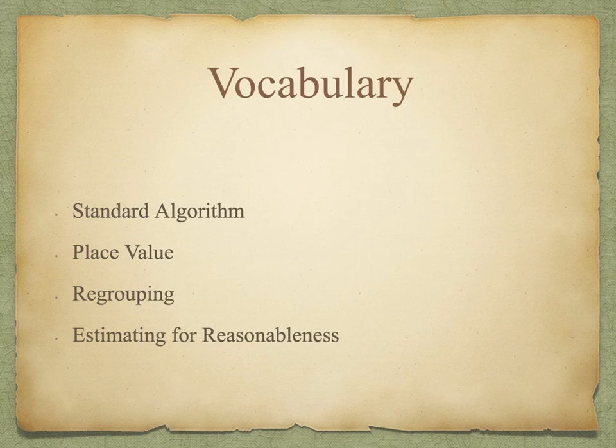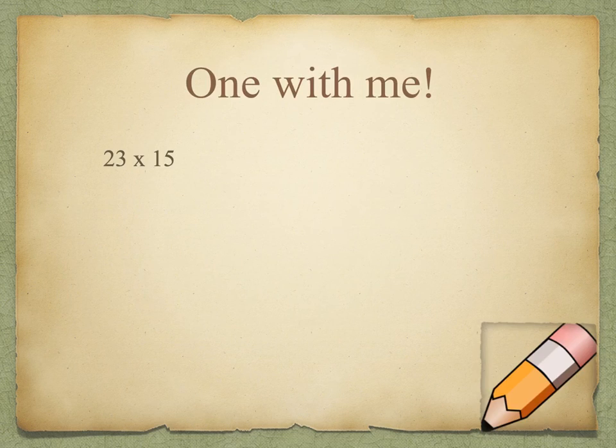But the biggest thing I want you to know is that estimating isn't something that we do on every single problem just because we have to. And it's not that we get our answer and then we estimate the answer. Estimating for reasonableness is a way to check your answer. So if you feel like you're not that confident in the answer that you got when you solved the problem, and you estimate, it gives you a quick check to see if your answer is close. And if it's not, then you made some kind of mistake.